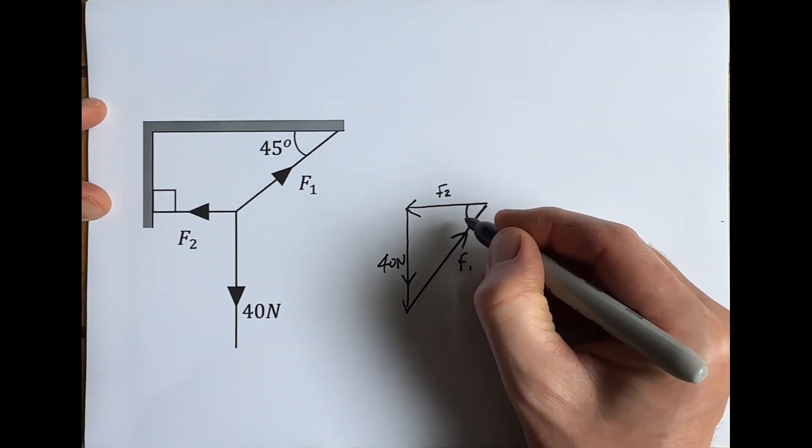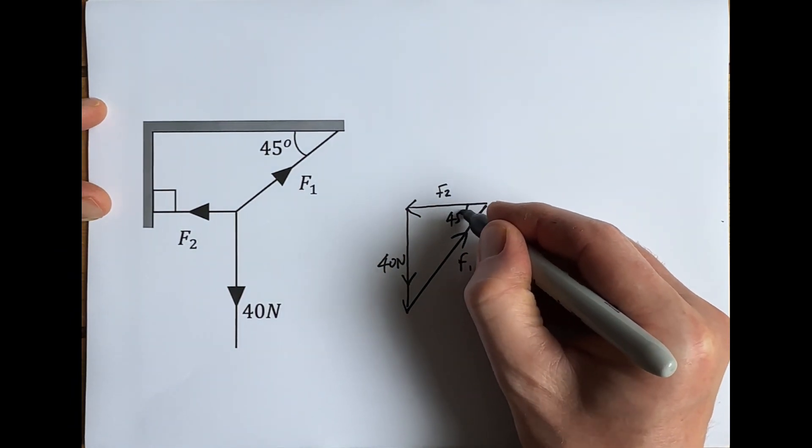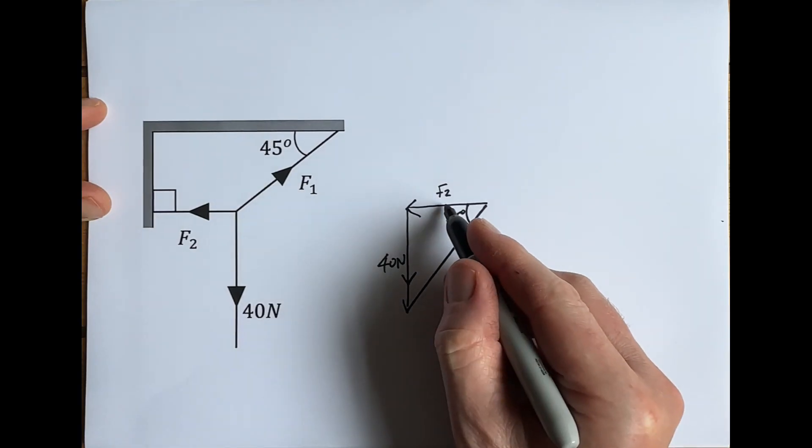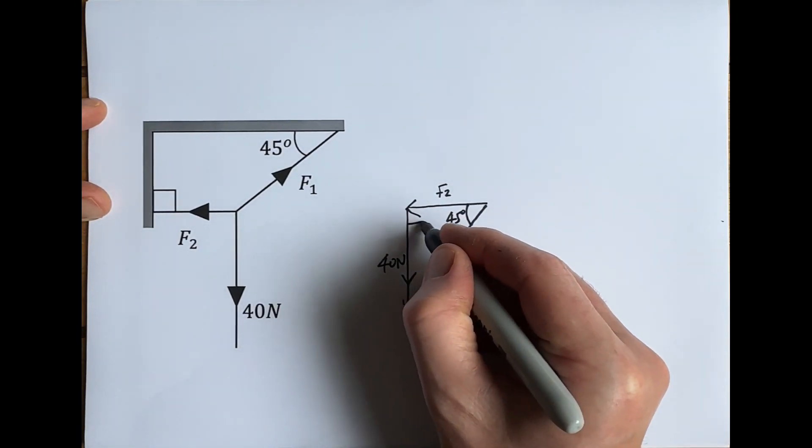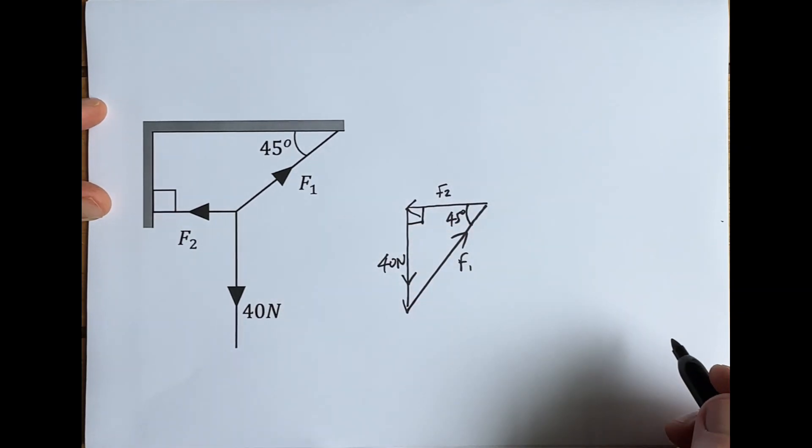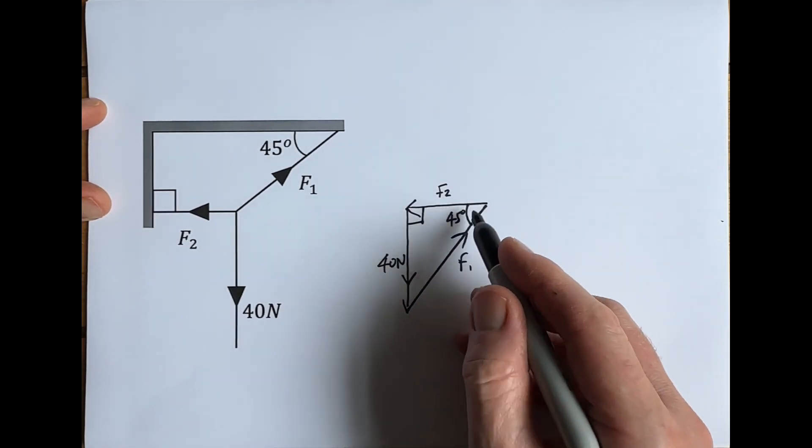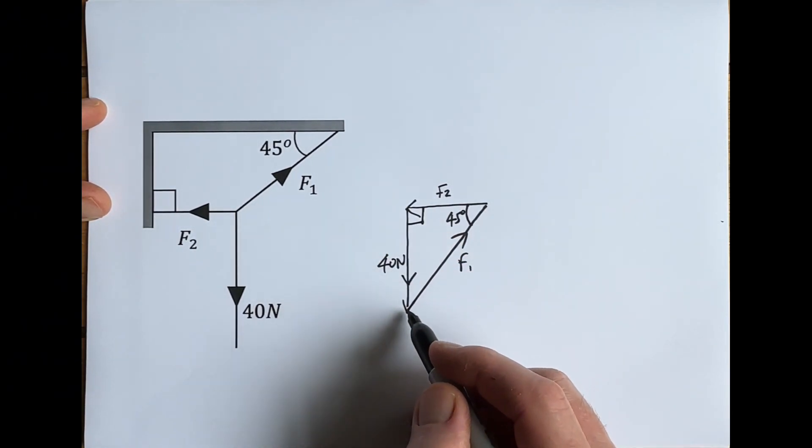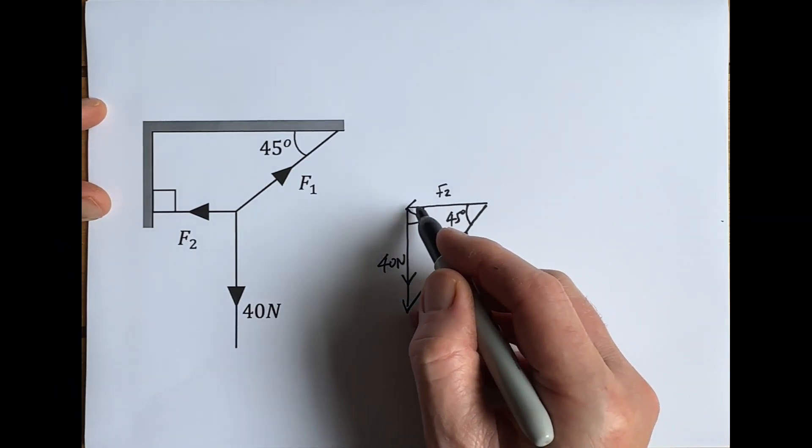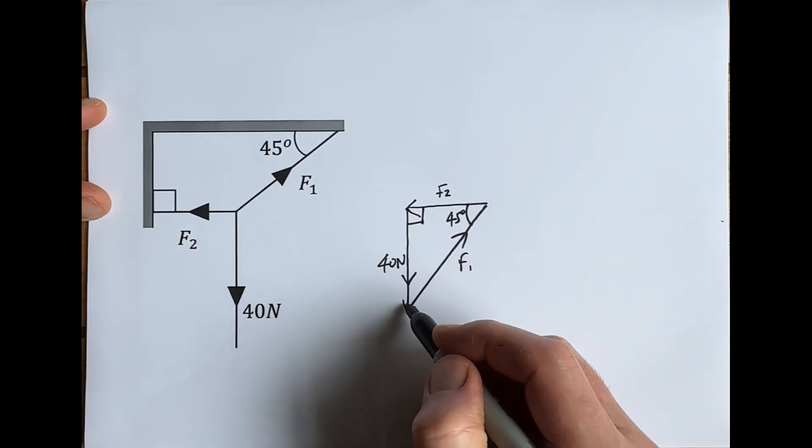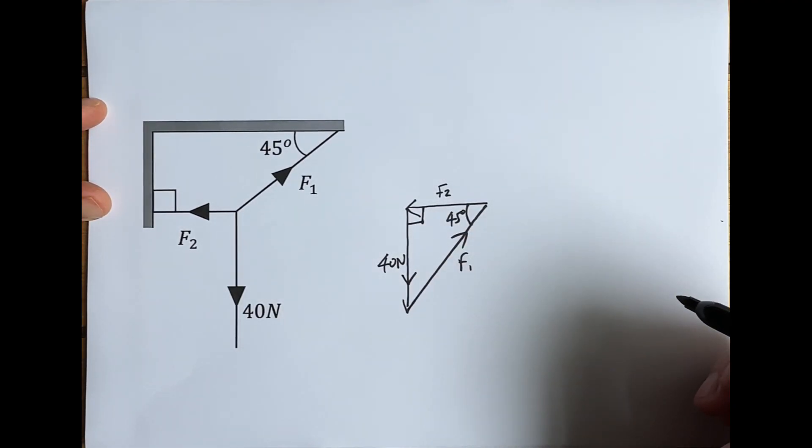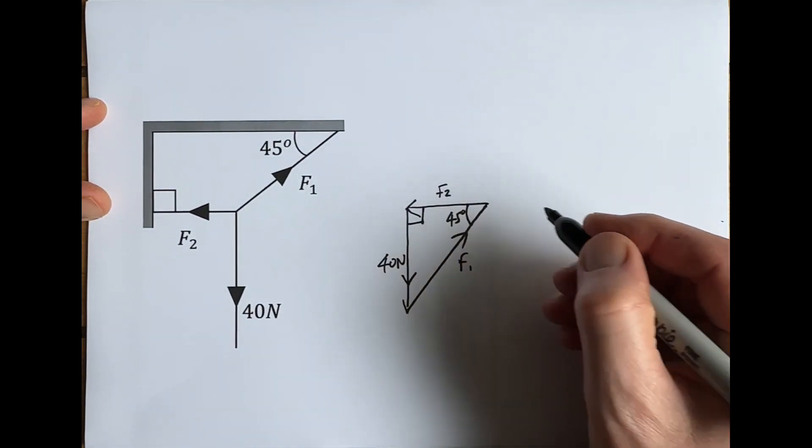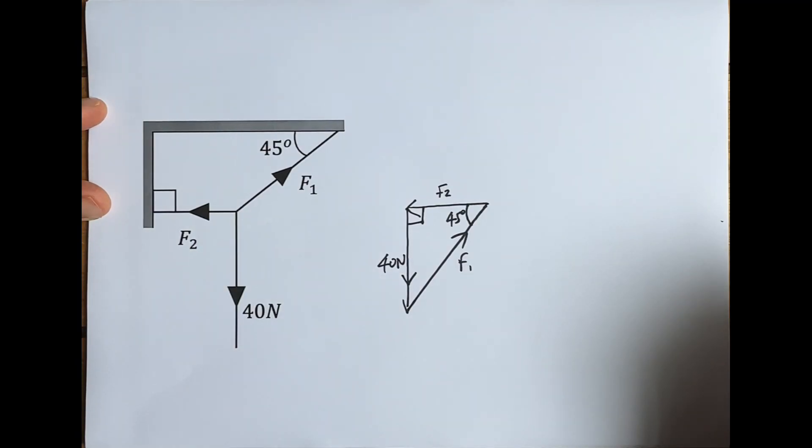We know that F1 is at 45 degrees to the horizontal, we know that F2 is horizontal, and also we can clearly tell that this angle here is 90 degrees. So now we've got a vector triangle, each vector lined up head to tail, and you can see that they form a closed triangle which means there is zero resultant force, which is exactly what we'd expect because this is a static problem.